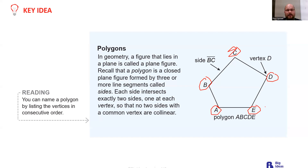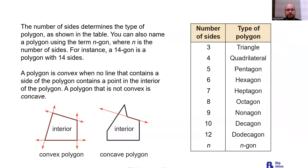The number of sides determines the type of polygon. Starting from smallest: three sides is a triangle, four is a quadrilateral, five is a pentagon, six is a hexagon, seven is a heptagon, eight is an octagon, nine is a nonagon, ten is a decagon, twelve is a dodecagon, and then n-gon. Note that eleven is an undecagon. You can also name a polygon using the term n-gon, where n is the number of sides — for instance, a 14-gon has 14 sides.